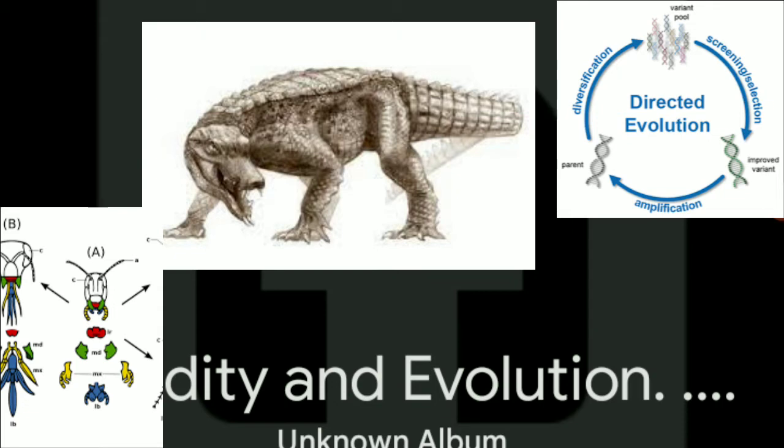Heterozygous: a condition where both the qualities are of various sorts, for instance, an organic entity has qualities Tt, it implies it has a quality for height and the other for dwarfness, just tall person is communicated.